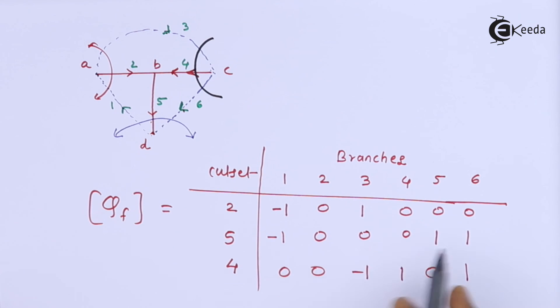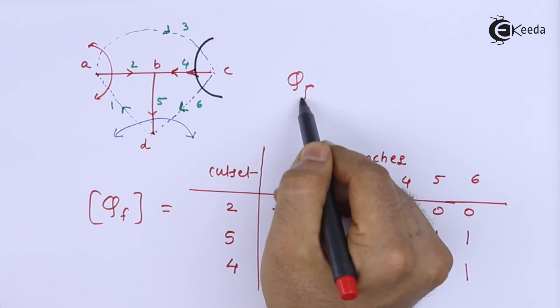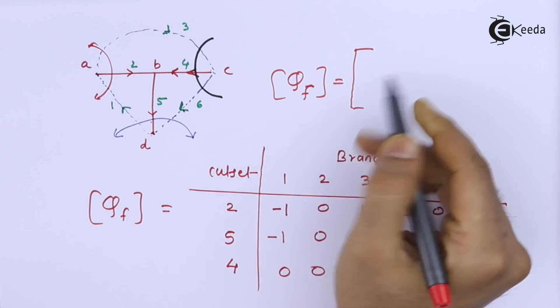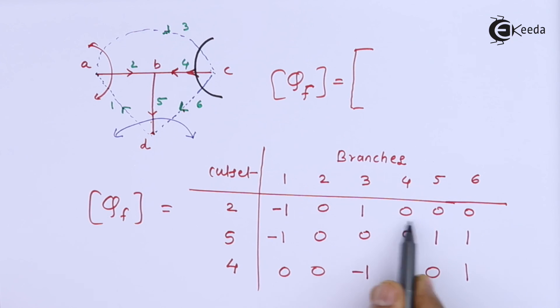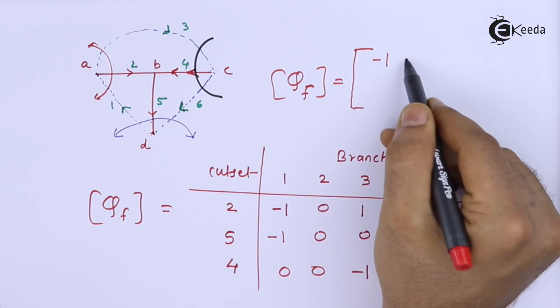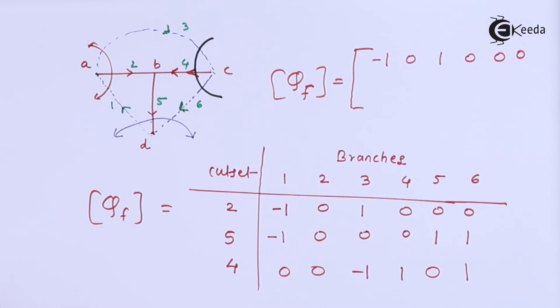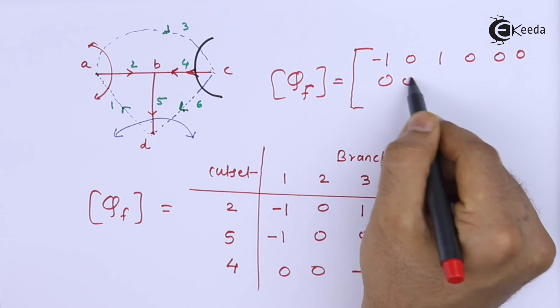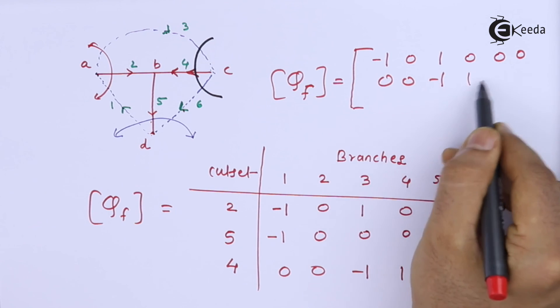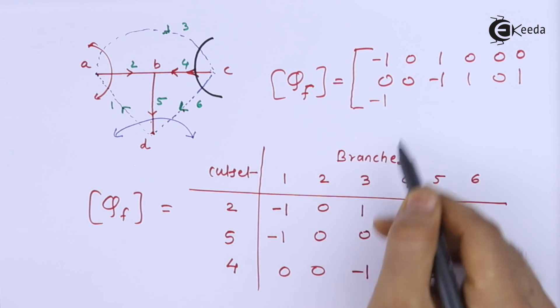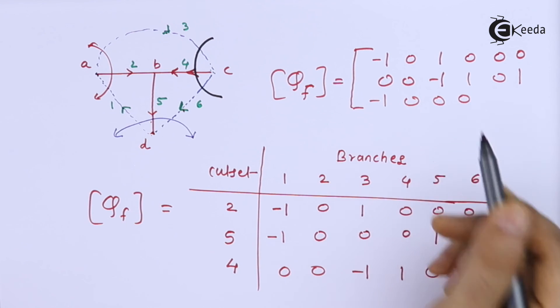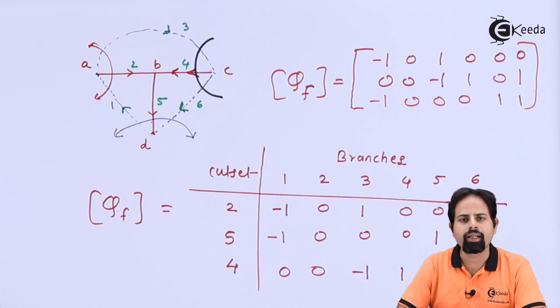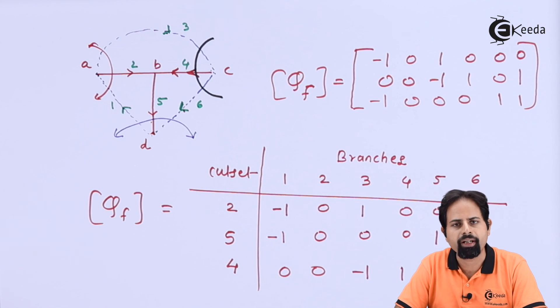So I have got the matrix. So if I write it in matrix form, I will write as QF in matrix minus 1, 0, 1, 0, 0, 0 and so on. Now in general, it is not required, but because this 4 comes before 5, 2, 4, 5, I will write this row here in between. And then minus 1, 0, 0, 0, 1, 1. And this completes my cut set matrix for given problem.